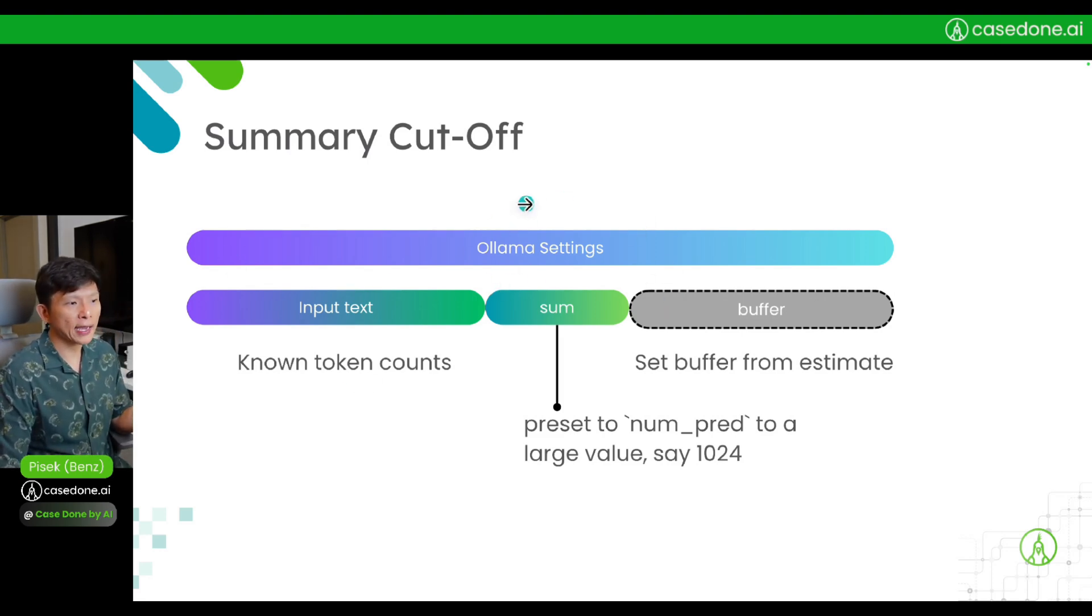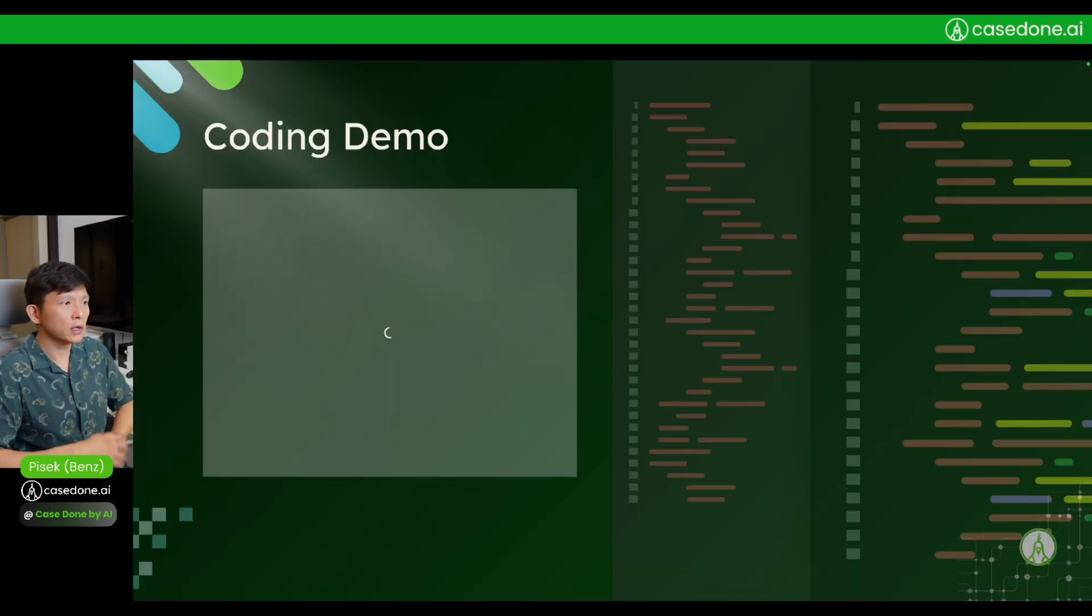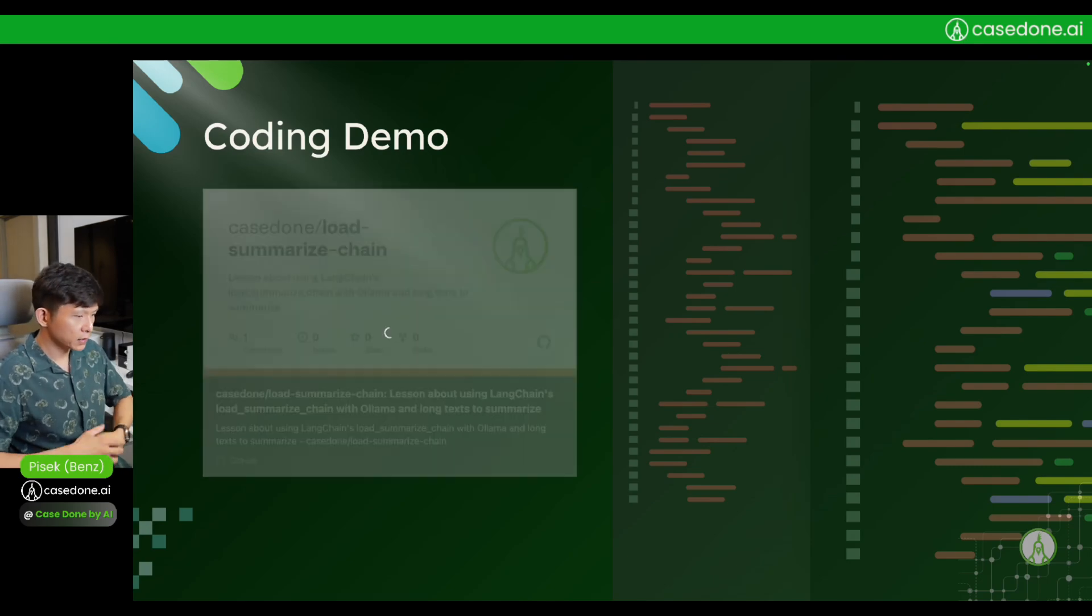Then you can go back and set the Ollama setting to cover that. So this is a way out. At least for myself, my application is going to be doing it this way - I know how many tokens I need to process, roughly the chunk size, and then I preset this, and therefore I can preset the buffer. That's what I will do in my coding demo.